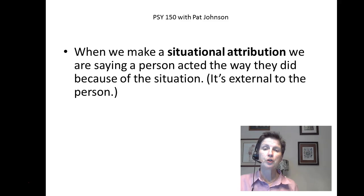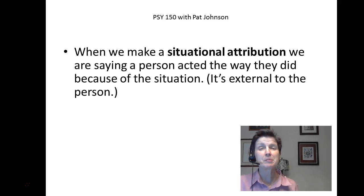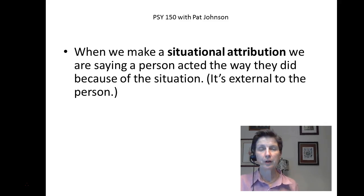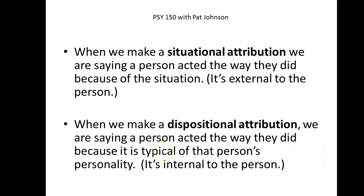You could be making a situational attribution. If you make a situational attribution about my screaming at you, you're saying to yourself, "Oh, she must be having a bad day, or maybe somebody cut her off on the way to work, or maybe her boss yelled at her." On the other hand, you could also make a dispositional attribution — saying something like, "She's just a mean nasty grouch" or "She's a really ugly person."